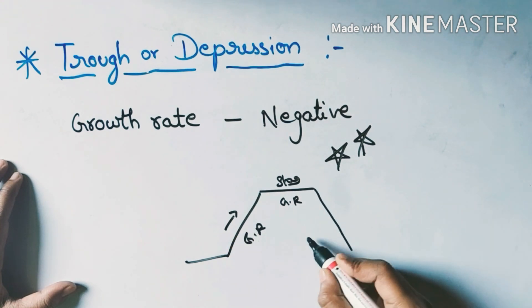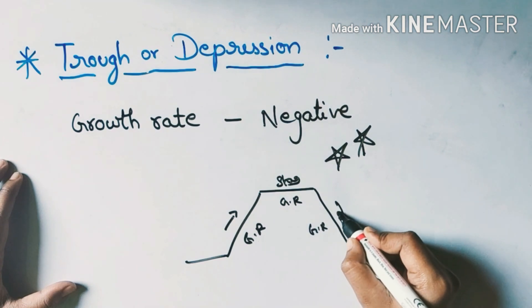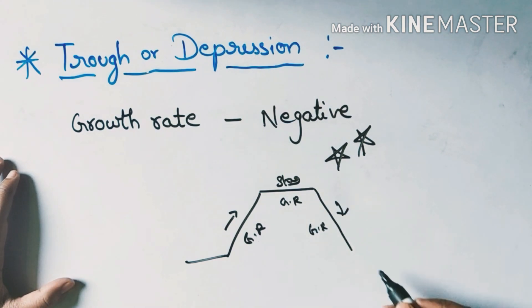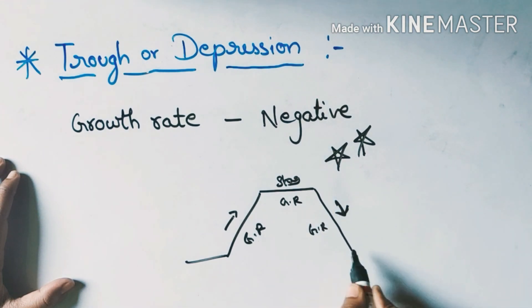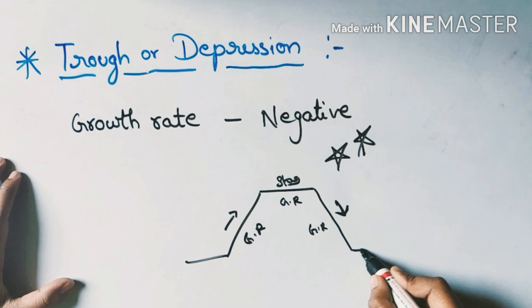In recession it's falling. When recession falls to its severe form, it is a trough. The growth rate is negative.